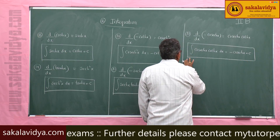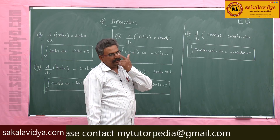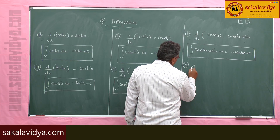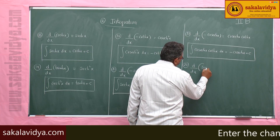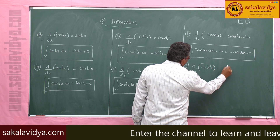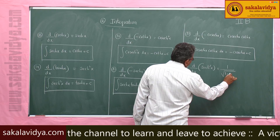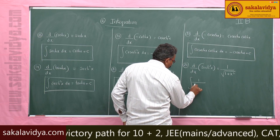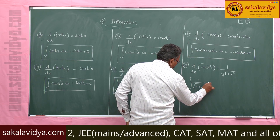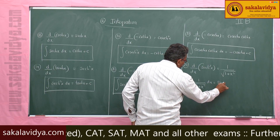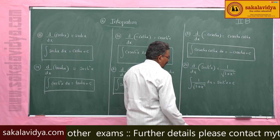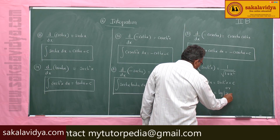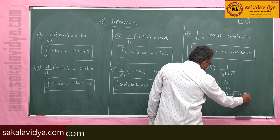Now, d by dx of inverse hyperbolic functions and their corresponding integrals. d by dx of sinh inverse x is equal to 1 by root of 1 plus x squared. So, integral of 1 by root of 1 plus x squared dx is equal to sinh inverse x plus c, or log of mod x plus root of x squared plus 1, plus c.